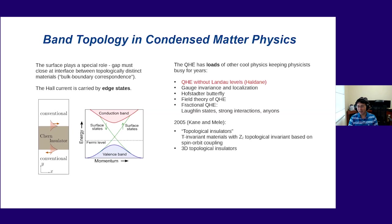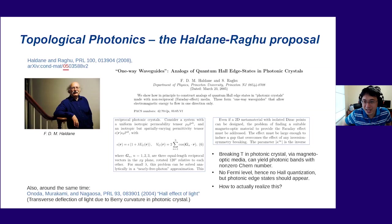The quantum Hall effect is only scratching the surface — there's loads of other cool stuff. People throughout the 1980s, 1990s, and early 2000s expanded the concept of band topology in various ways. For example, in 2005 people came up with 2D materials that don't require an applied magnetic field but intrinsically function as topological insulators, based on a new kind of topological invariant slightly different from the Chern insulator. People also figured out how to create three-dimensional materials with topological insulator properties.